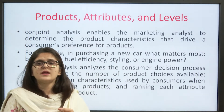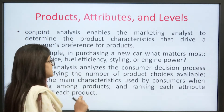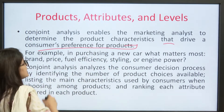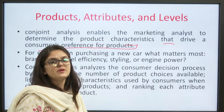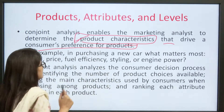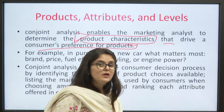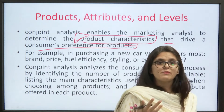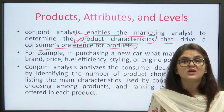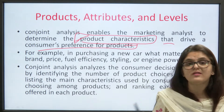Conjoint analysis enables the marketing analyst to determine the product characteristics that drive a consumer's preference for a product. When talking about consumer preference and product characteristics, for example, when purchasing a car, what matters the most? Is it the brand, the fuel efficiency, the car size, car style, the price, or the engine power that matters the most?